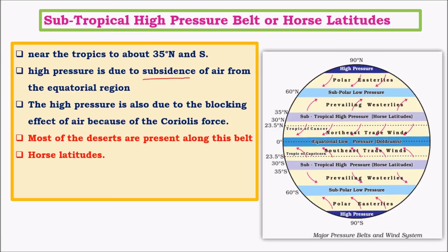High pressure is also due to the blocking effect of air because of the Coriolis force. Just like in the equatorial low where there is upliftment, the uplifted air moves towards the subtropical high pressure belt. This opposite movement creates a blocking effect — usually the path is affected by Coriolis force. This blocking effect gives rise to high pressure where there is convergence in the upper layers, air falls to the ground, and there is divergence at the lower layers. Most deserts are present along this belt.